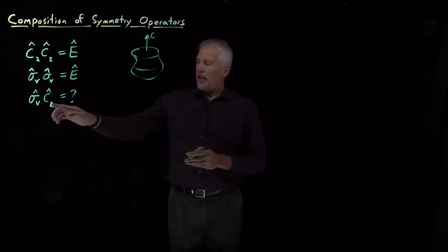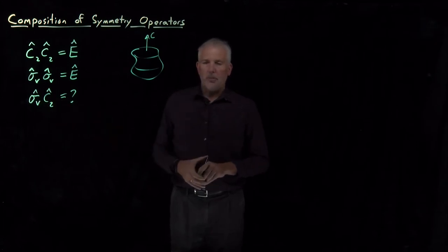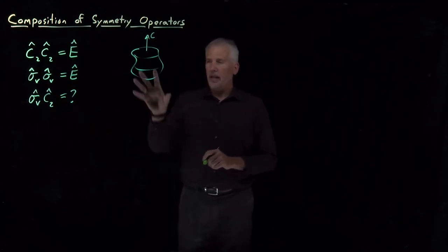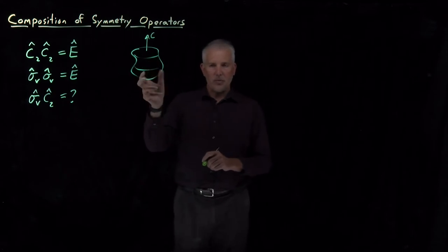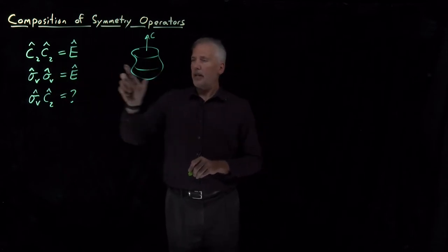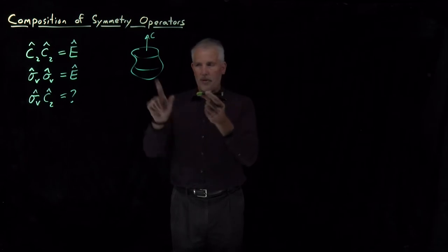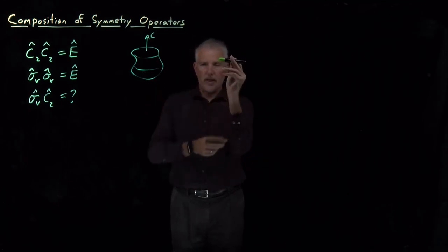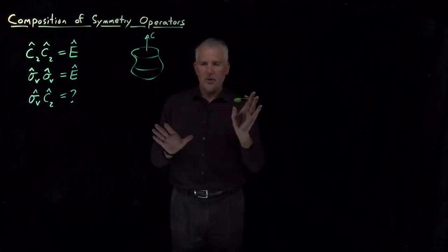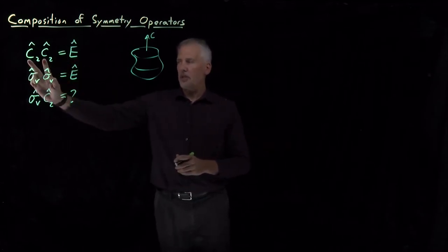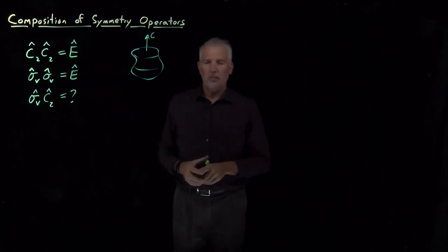To understand how to do composition of symmetry operations in trickier cases, note first that it doesn't matter what you apply the operations to — any object you can use to visualize the rotations and reflections is fine. Two 180-degree rotations bring any object back to where it started. It's the operations themselves that define what you get when you combine them, not the target of those operations.